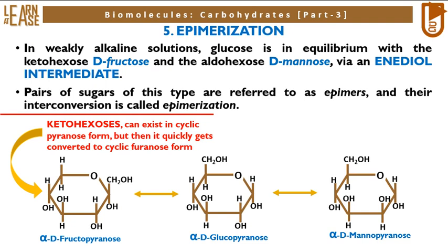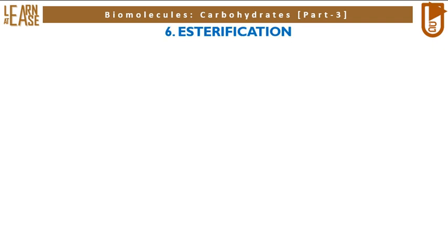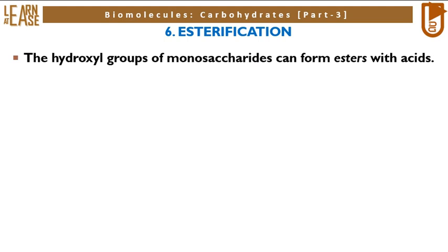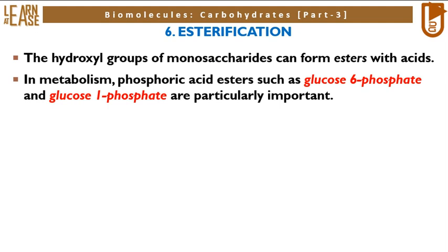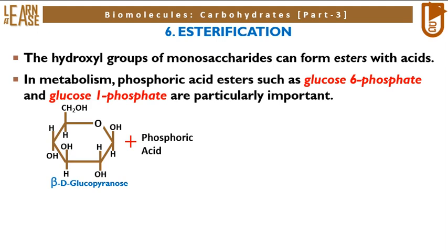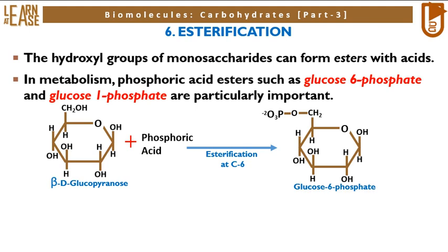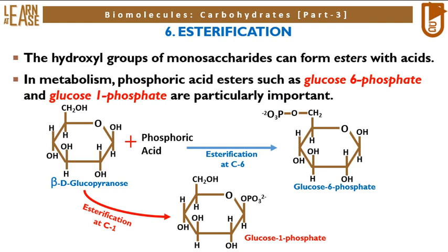The sixth and last reaction is esterification. The hydroxyl groups of monosaccharides can form esters with acids. In metabolism, phosphoric acid esters such as glucose-6-phosphate and glucose-1-phosphate are particularly important. The reaction shows beta-D-glucopyranose reacting with phosphoric acid to yield glucose-6-phosphate if esterification occurs at C6 position, or glucose-1-phosphate if esterification occurs at C1 position.